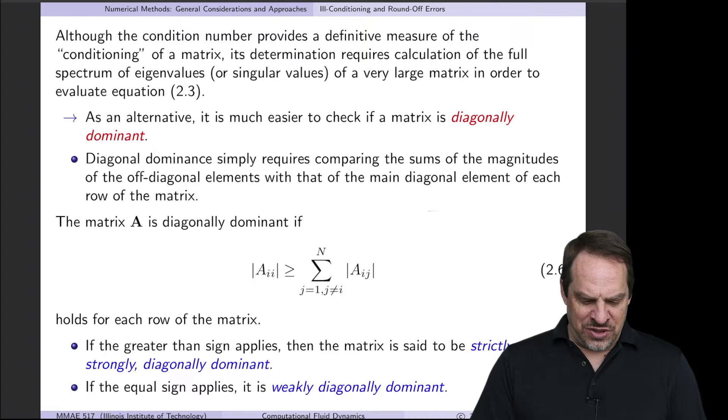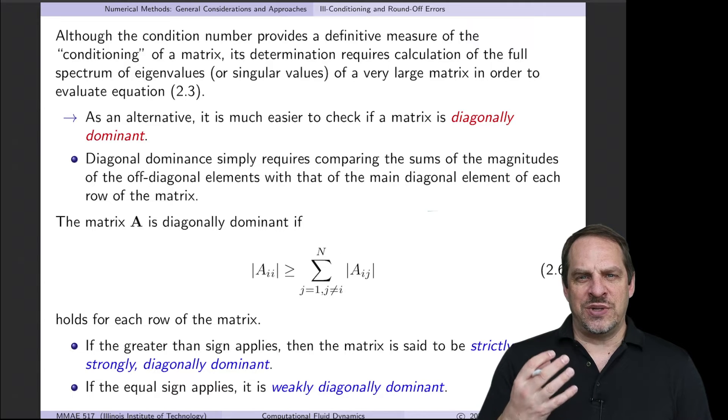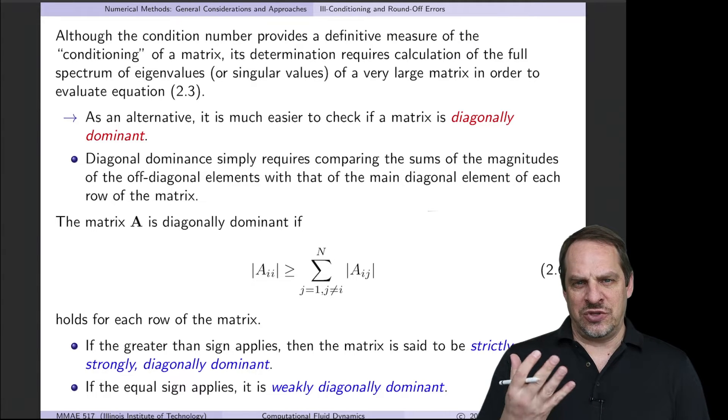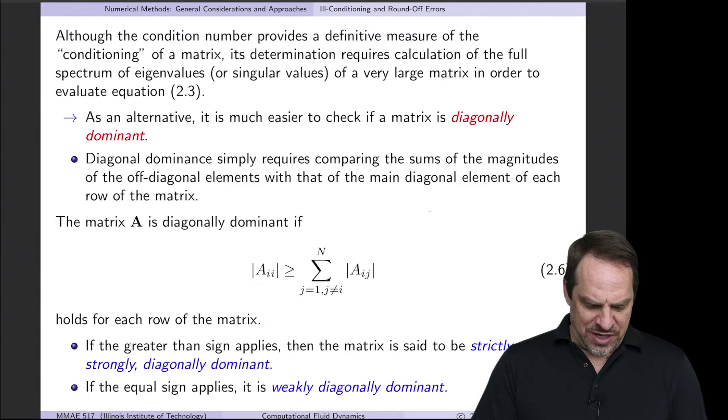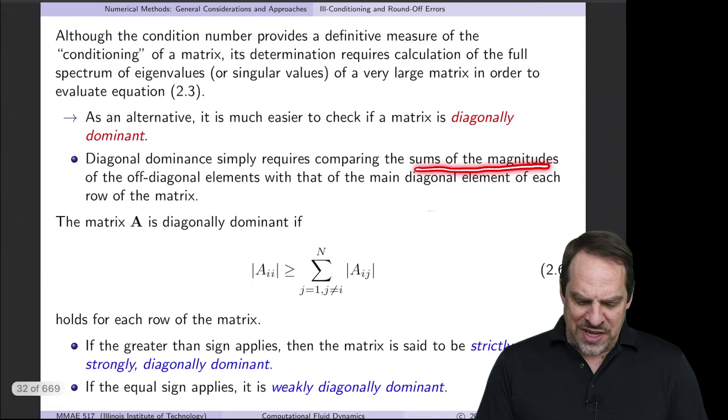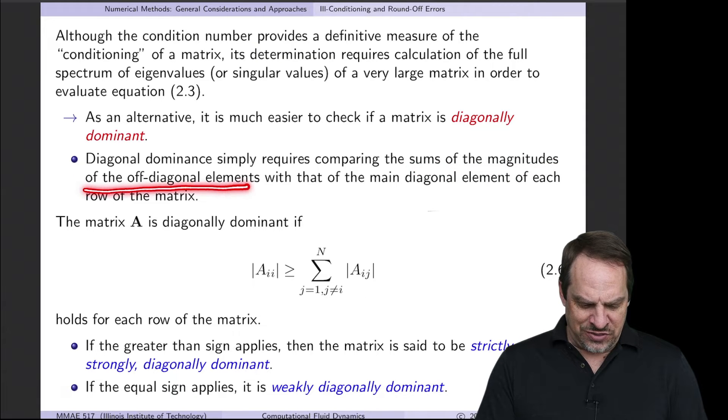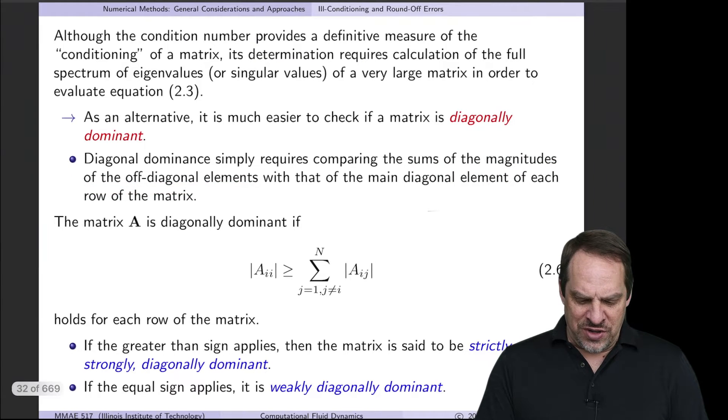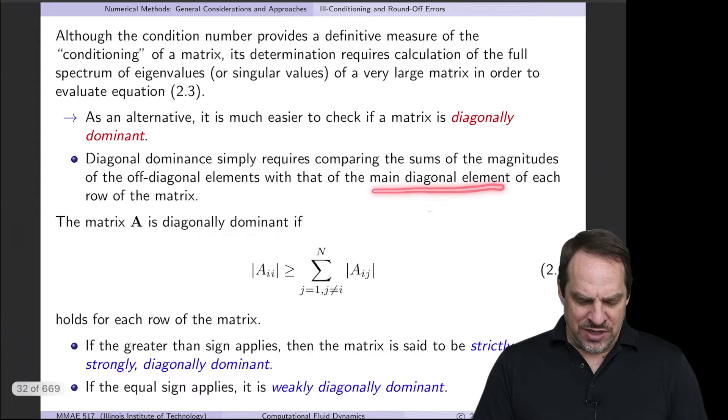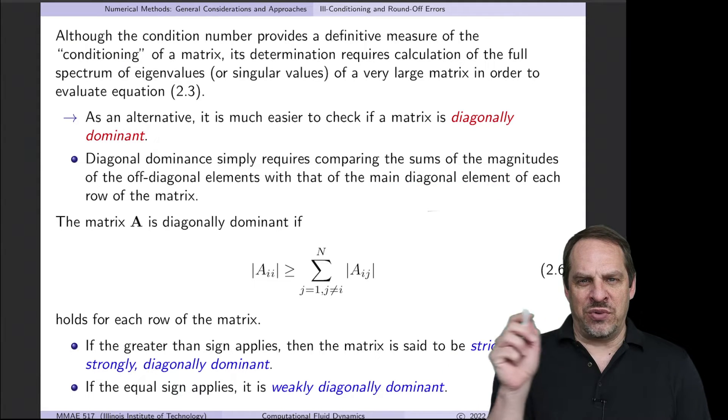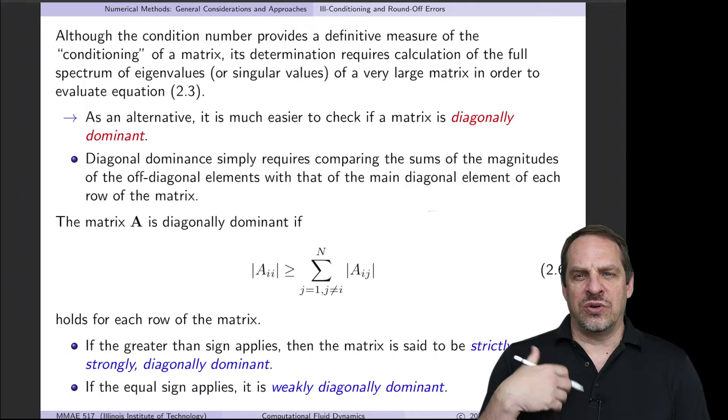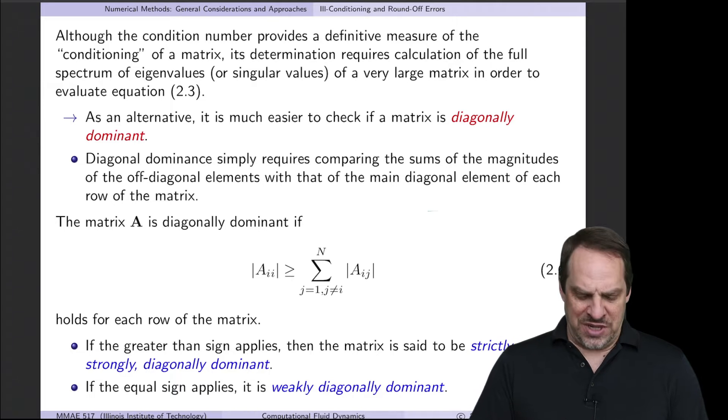So I want to discuss an alternative, and that is to test for diagonal dominance. It's a very straightforward test. You can often see visually whether a matrix is diagonally dominant. And it's exactly what it sounds like. Diagonal dominance simply requires that the sum of the magnitudes of the off-diagonal elements be no greater than that of the main diagonal element. So this is a row-by-row test. So every row has to be diagonally dominant in order for the matrix itself to be diagonally dominant.